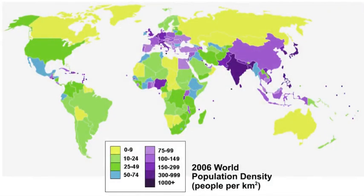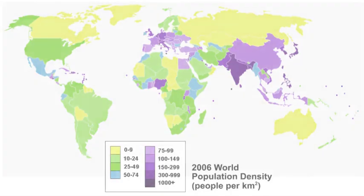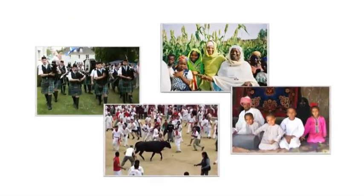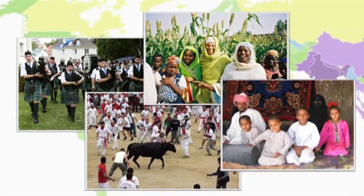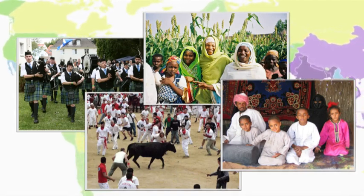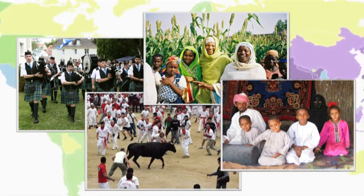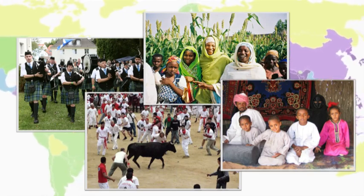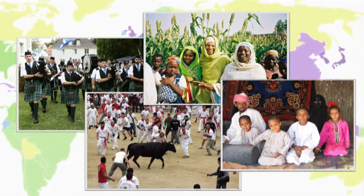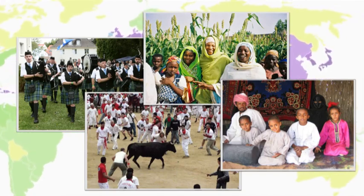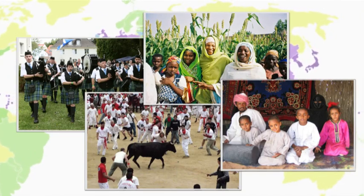All epidemiologic research involves some sort of population. Every population has its own history, culture, and economic and social context, which influences how and why people are exposed to risk factors and how people are affected by their exposures. Population research begins by considering the distribution and determinants of health outcomes at a population level, although it may also include individual and micro-level analyses. An understanding of the historical and social context of health outcomes is important in order to conduct effective research and design effective interventions.